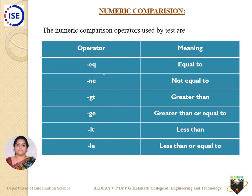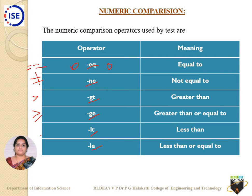For numeric comparisons, the operators are: double equals or hyphen eq (equal to), hyphen ne (not equal to), hyphen gt (greater than), hyphen ge (greater than or equal to), hyphen lt (less than), and hyphen le (less than or equal to). These operators are placed between two operands for any numeric comparison, instead of using symbolic operators like double equals or greater than.